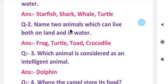Question number 2: Name two animals which can live both on land and in water. Which can live both on land and in water. Answer: Frog, turtle, toad, crocodile. These are the names of four animals that live both on land and in water.